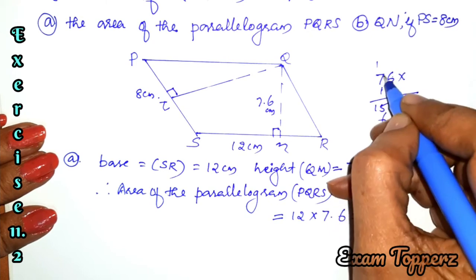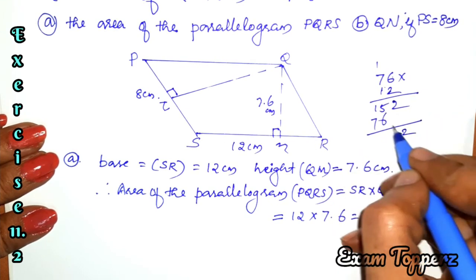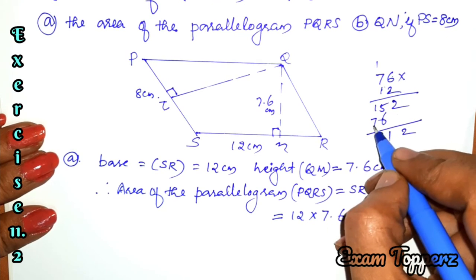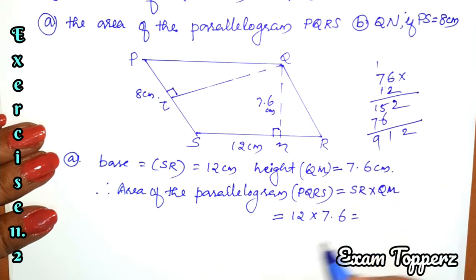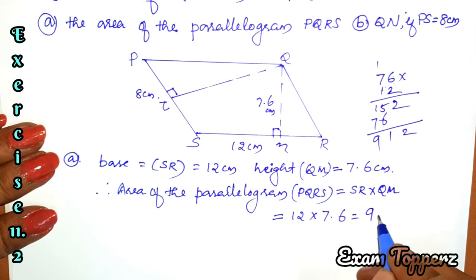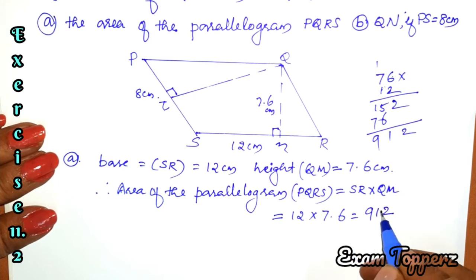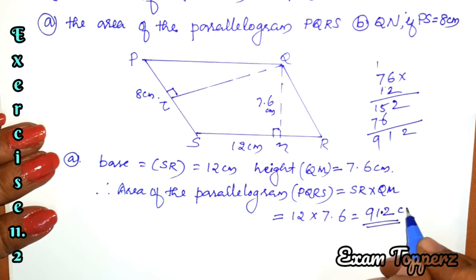Continuing: 1 × 6 = 6; 1 × 7 = 7. Then 5 + 6 = 11; 7 + 1 = 8; 8 + 1 = 9. Result: 900 and 12, giving a decimal point result of 91.2 cm².